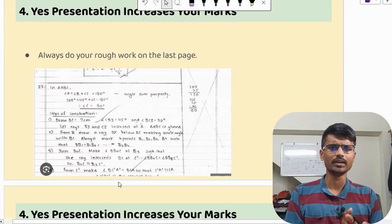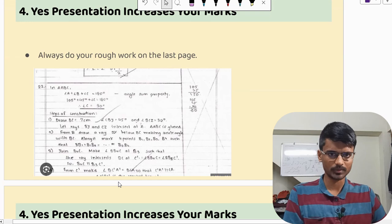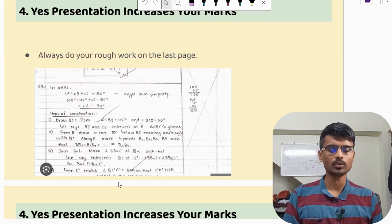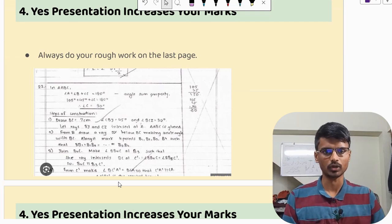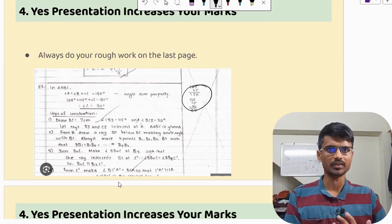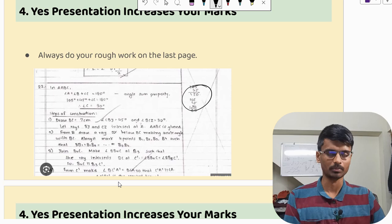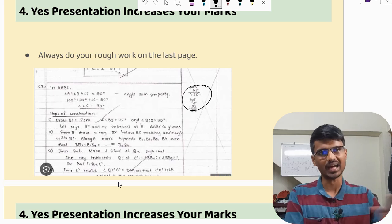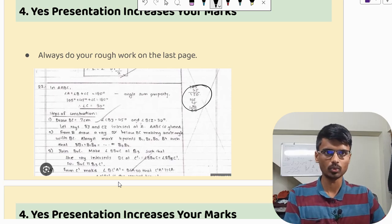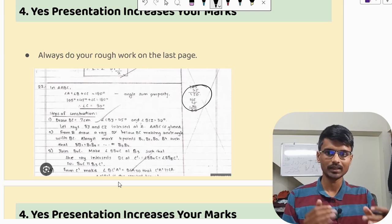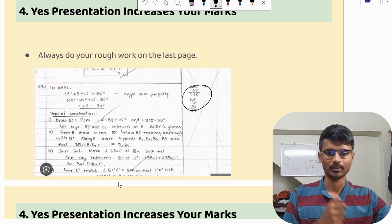Next, some students I have seen, they do some space on the left side of the paper and they do the calculation there. I would suggest you not to do this calculation, like small calculation. If you have some multiplication, 105 into 45, or you have some division, 100 divided by 25, some small calculation, I would suggest you not to do it on the answer paper. I would suggest you to do it on the last page. You can do all these calculations in the rough. Avoid this. This will keep your answer neat. That is your aim.